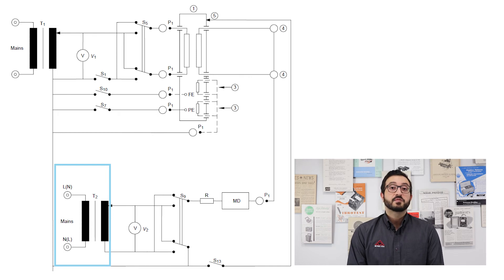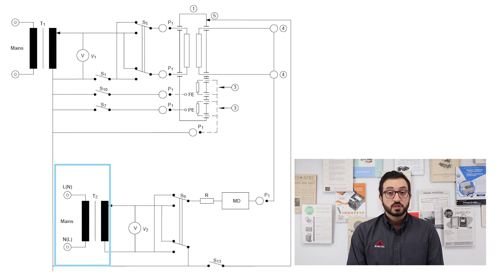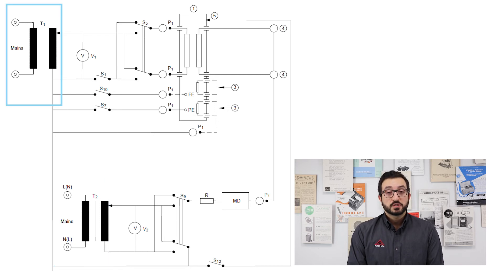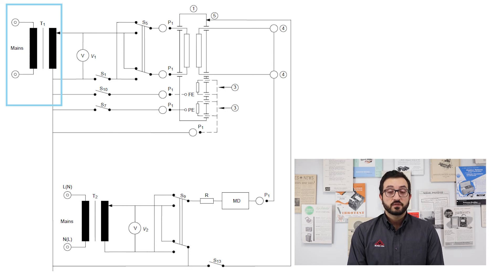The same test is then repeated by simulating a reverse polarity condition of T2, to measure the same leakage current in a 180 degree phase difference between T1 and T2.